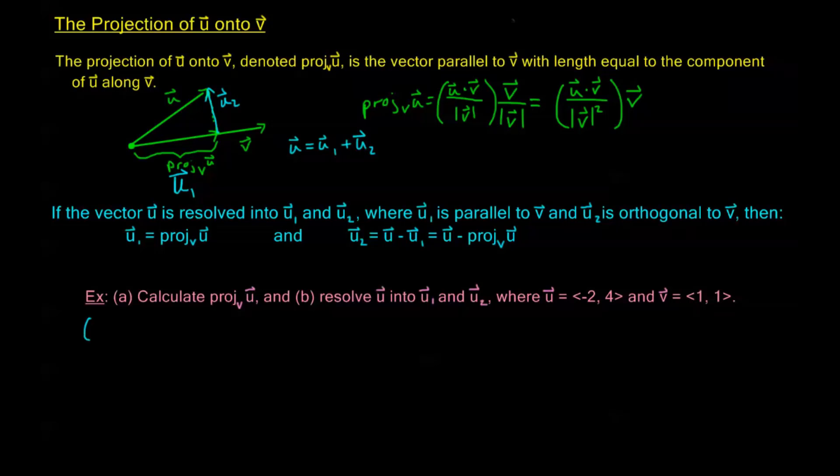Let's do part (a) first. I want to calculate the projection of u onto v. By our formula above, that's going to be the dot product u·v divided by the magnitude of v squared, all times the vector v. Let's start plugging in.